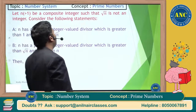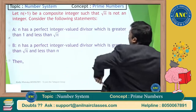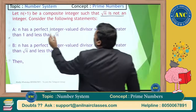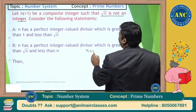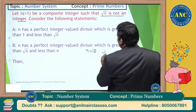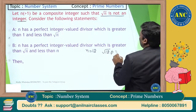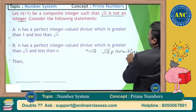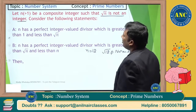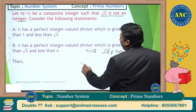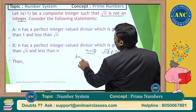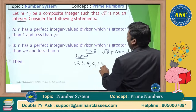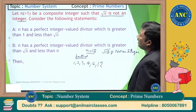Next: let n be a composite integer such that root n is not an integer. Take n=12 as an example — root 12 is not an integer. Factors of 12 are 1, 2, 3, 4, 6, 12.